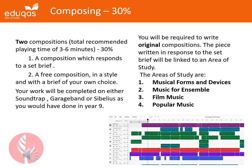The second composition, which will be completed in Year 10, is a free composition in a style and brief of your own choice. You will be completing both of these compositions on either Soundtrap, GarageBand or Sibelius, as you would have done in Year 9.